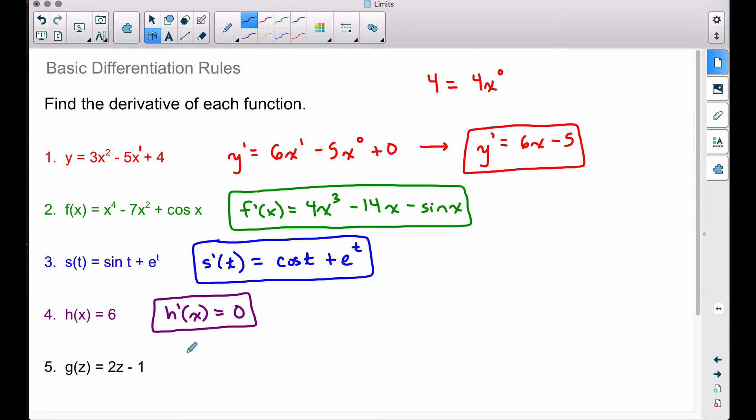And then last but not least, g prime of z, g prime of z. This is a linear polynomial here. So this is z to the first, pull your one down, multiply it by two. So we have two z to the what power now? When we subtract one, we get zero, and the derivative of a constant is going to be zero.